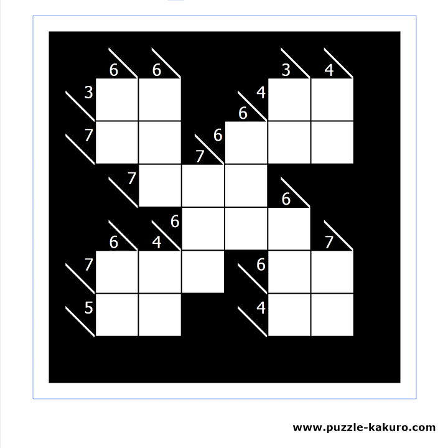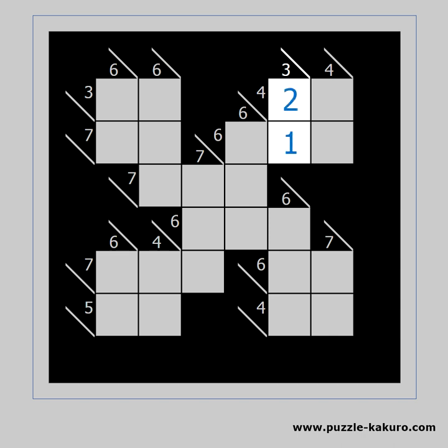The main skill you should develop is to know which sums can be solved in only one way. For example, 3 in 2 cells can only be 1 and 2. 4 in 2 cells can only be solved as 1 and 3. 2 and 2 is not an option because numbers cannot appear more than once in a single block.